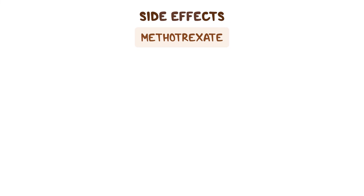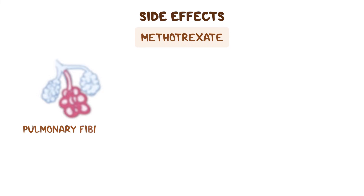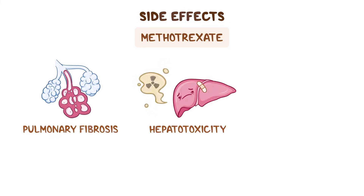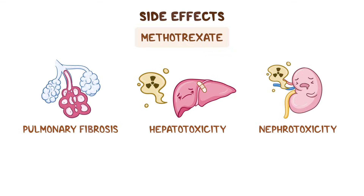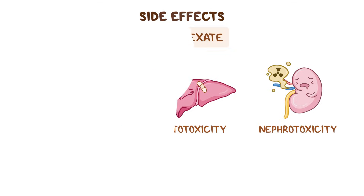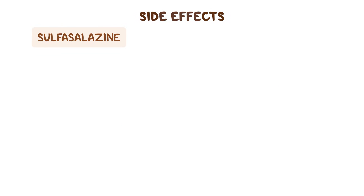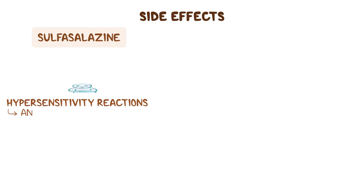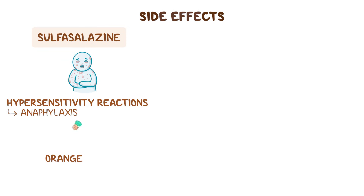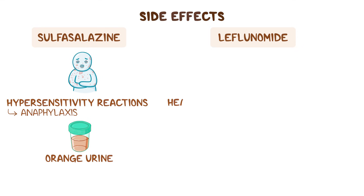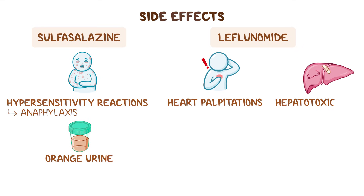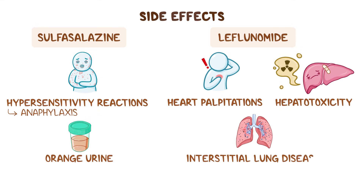More specifically, methotrexate can lead to pulmonary fibrosis, hepatotoxicity, and nephrotoxicity. Sulfasalazine can result in hypersensitivity reactions like anaphylaxis and orange discoloration of the urine, while important side effects of leflunomide include heart palpitations, hepatotoxicity, and interstitial lung disease.